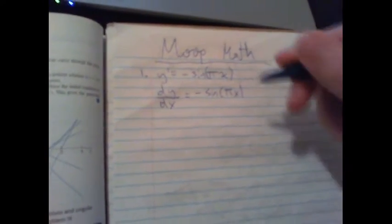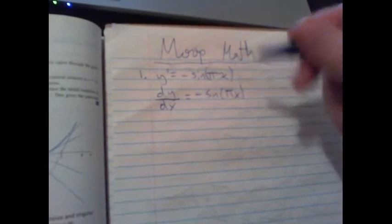Solve the ODE by integration. So number one. Y prime equals negative sine pi x. Okay. So you have y prime equals negative sine pi x. So it's saying dy over dx equals negative sine pi x.